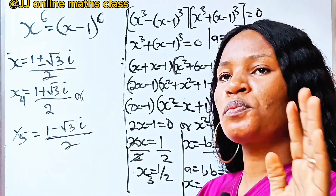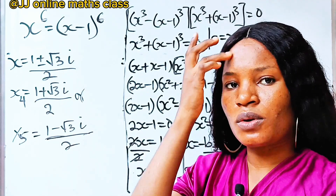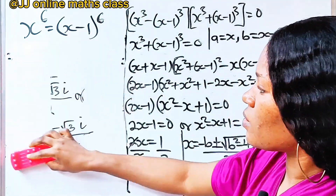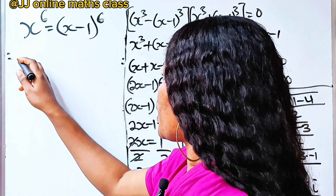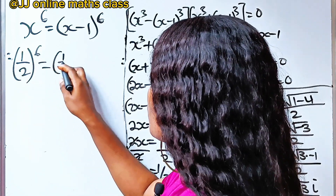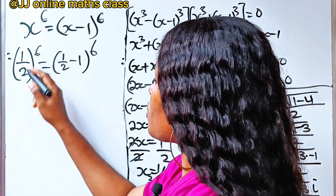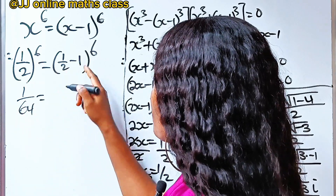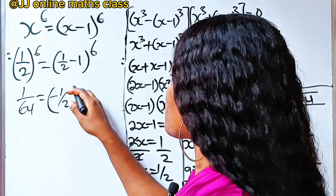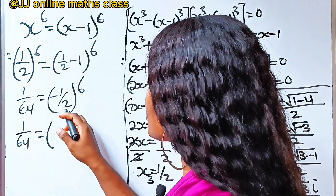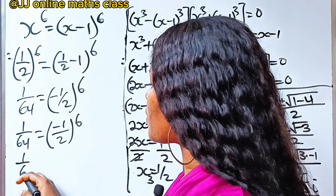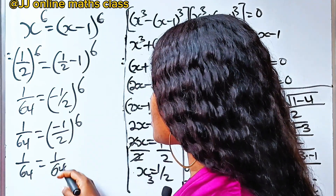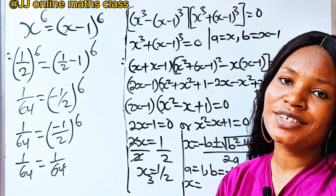Let's verify by substituting x equals one half into the original equation. We get one half to the power of six equals one half minus one to the power of six. The left side is one over 64. The right side is minus one half to the power of six, and since six is even, the negative becomes positive, giving one over 64. So one over 64 equals one over 64. The solution is verified. Thank you for watching.